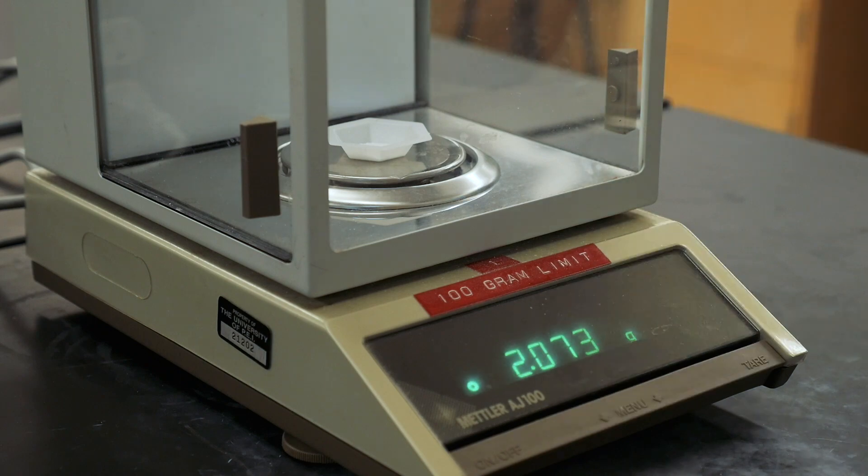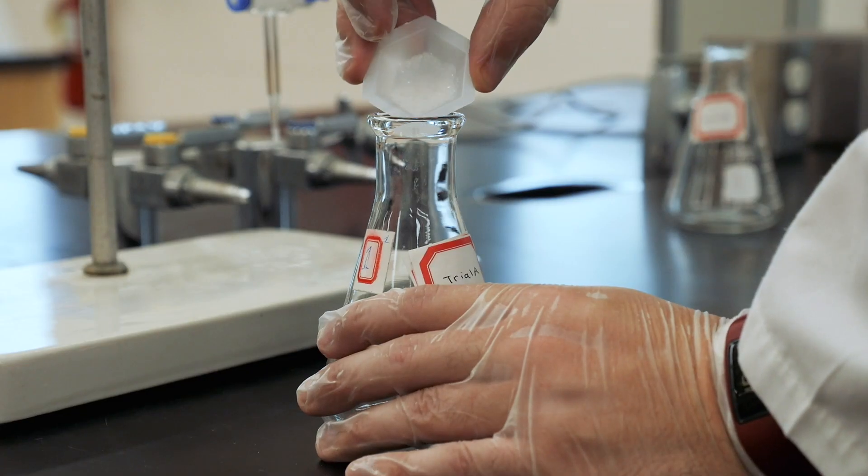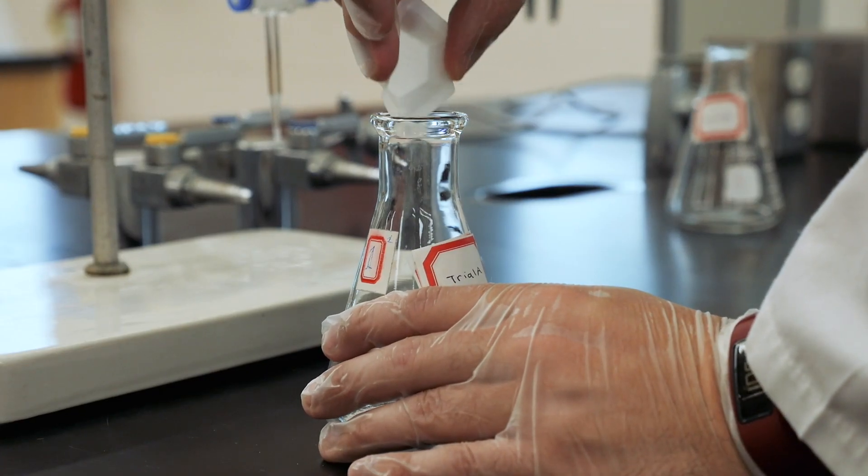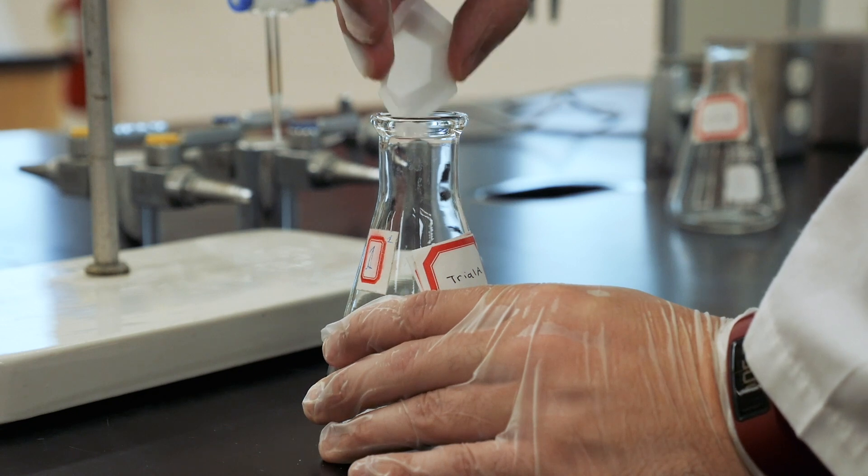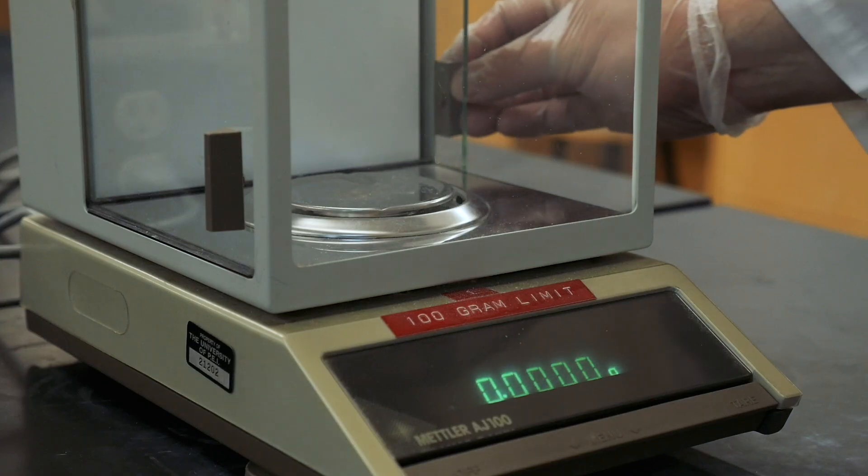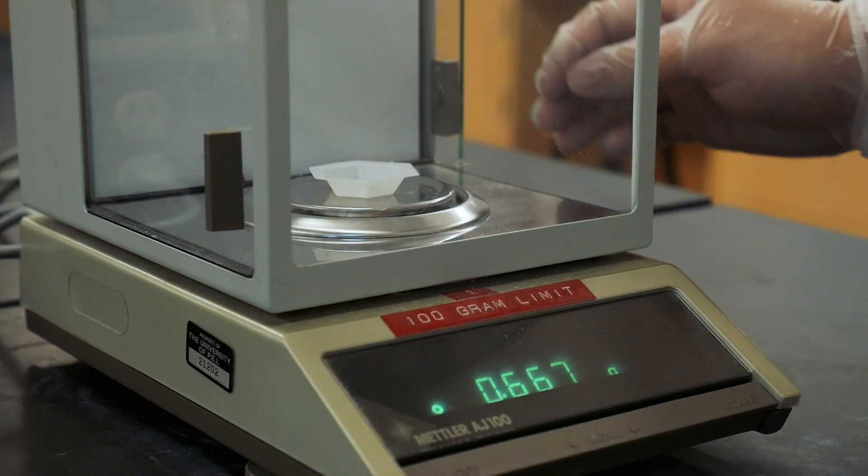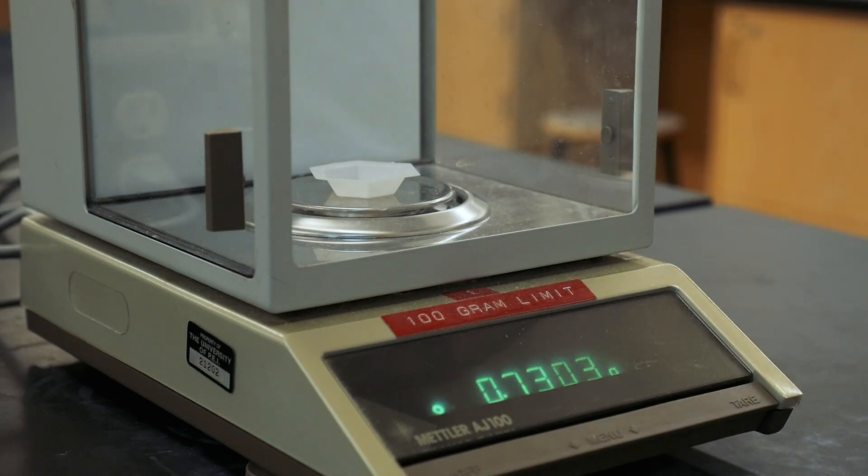Now you can transfer the entire sample to a clean 250 ml Erlenmeyer flask. At this point, reweigh the empty weighing dish, and from the difference in mass you can determine the mass of KHP which has actually been transferred to the Erlenmeyer. This accounts for any microscopic amount of KHP that might have adhered to the dish.